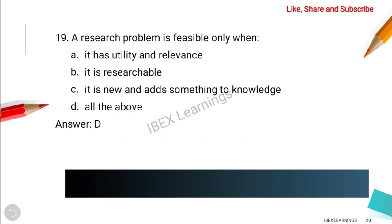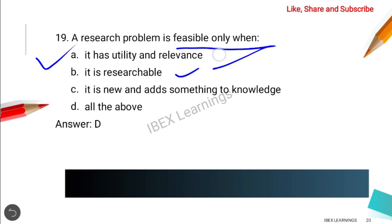The next question is: the research problem is feasible only when — it has utility and relevance, it is researchable, and it is new and adds something to knowledge. All of these options are correct, so the answer is all of the above.